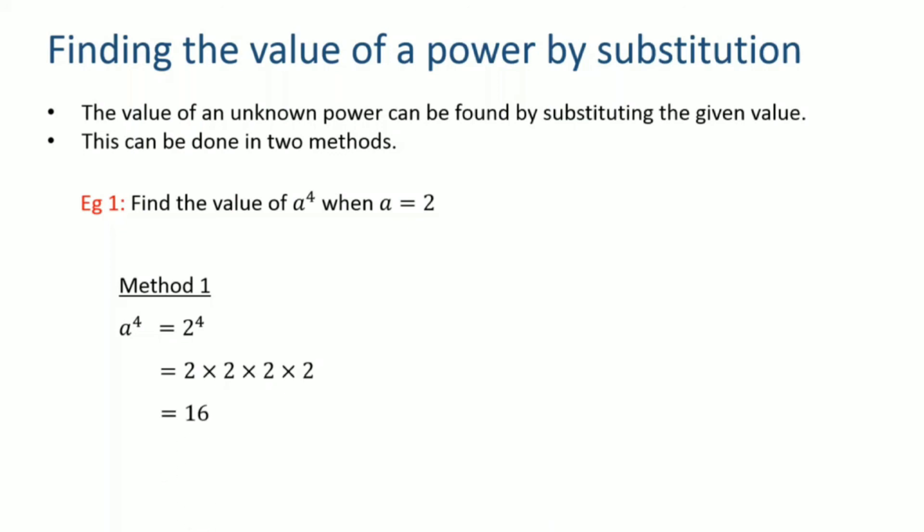So a to the power 4 is equal to 16 when a is equal to 2. The second method is similar with one step different: in the first method I substituted and then expanded; in the second method I expand first and then substitute. So a to the power 4 is written as a into a into a into a, and since a is equal to 2, I replace each a with 2 and multiply to get the same answer of 16. Both methods give the same result.